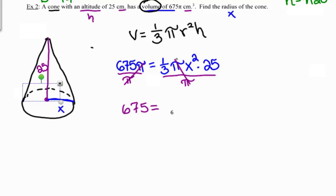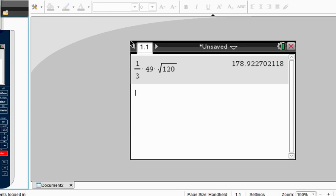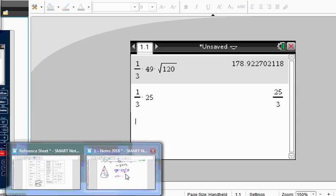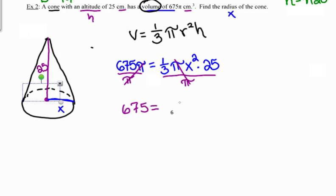I've also got this one-third times 25. There are a few different options I can think of for dealing with that. I'm going to multiply those two together right now, but this is not the only approach to solving this problem. So I'm going to say this is equal to 25 thirds times x squared.